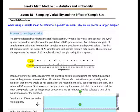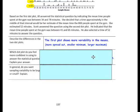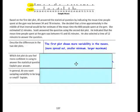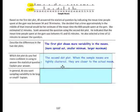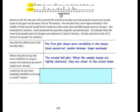Describe the differences in the two dot plots. The first dot plot shows more variability in the means — it is more spread out, with a smaller minimum and a larger maximum. Which dot plot do you feel more confident in using to answer the statistical question? I feel more confident using the second dot plot. When the sample means are tightly clustered, they are closer to the actual mean.